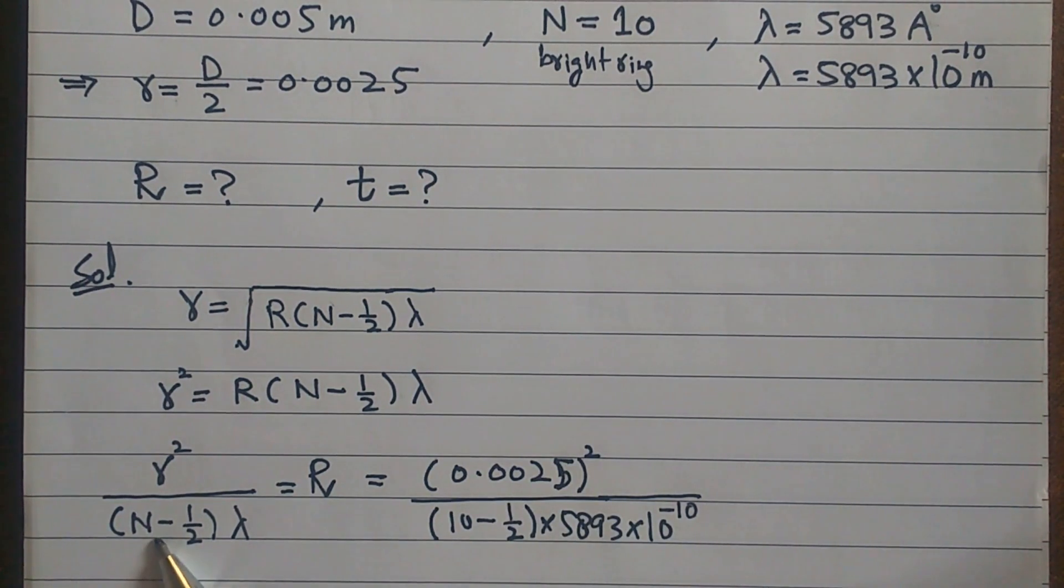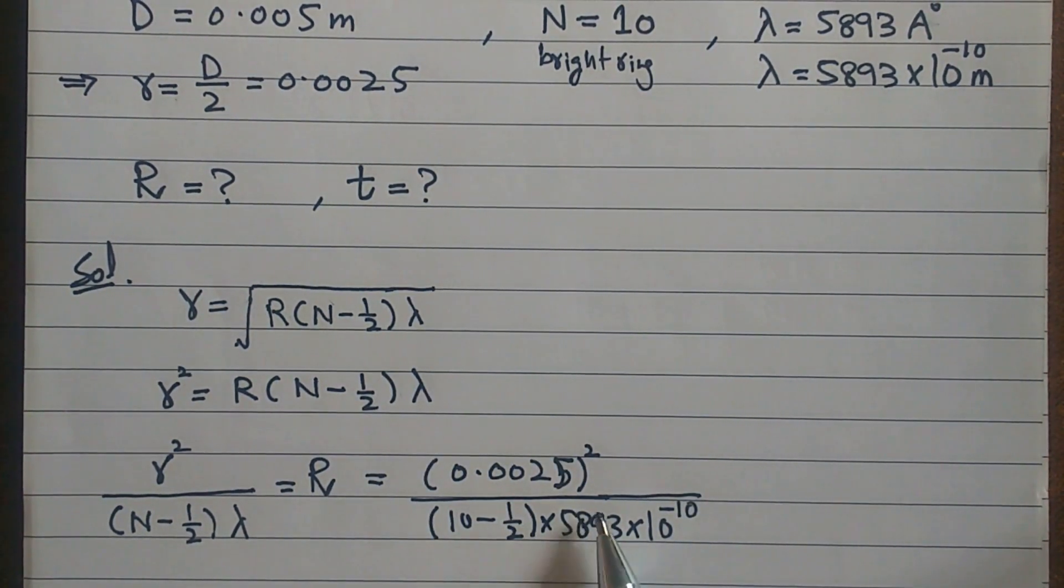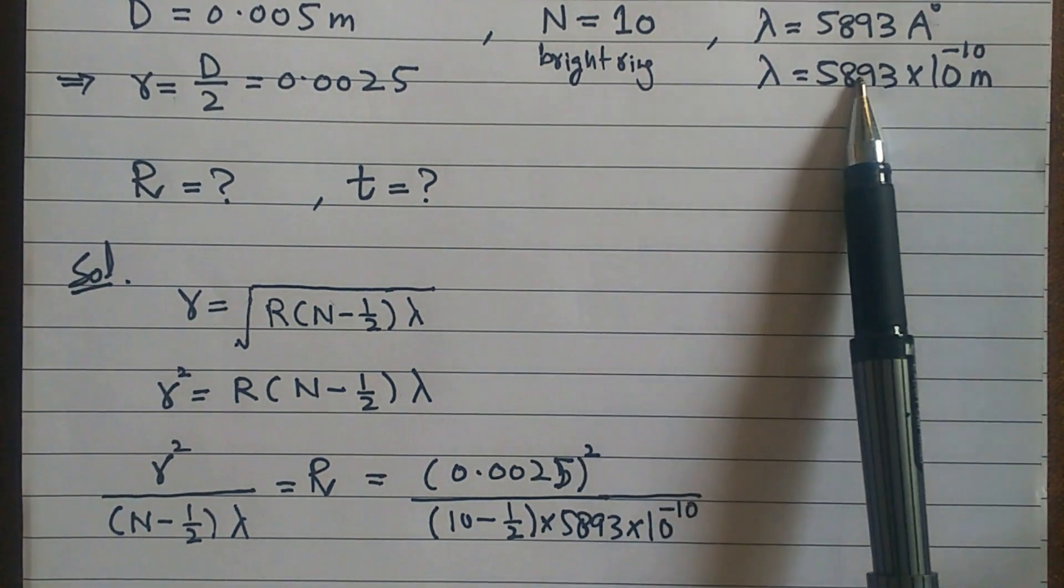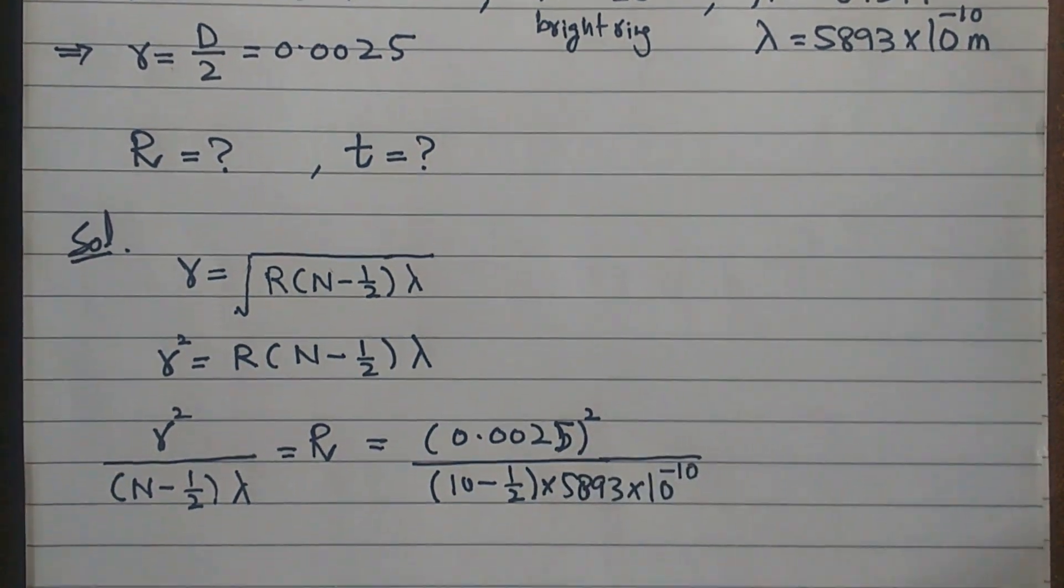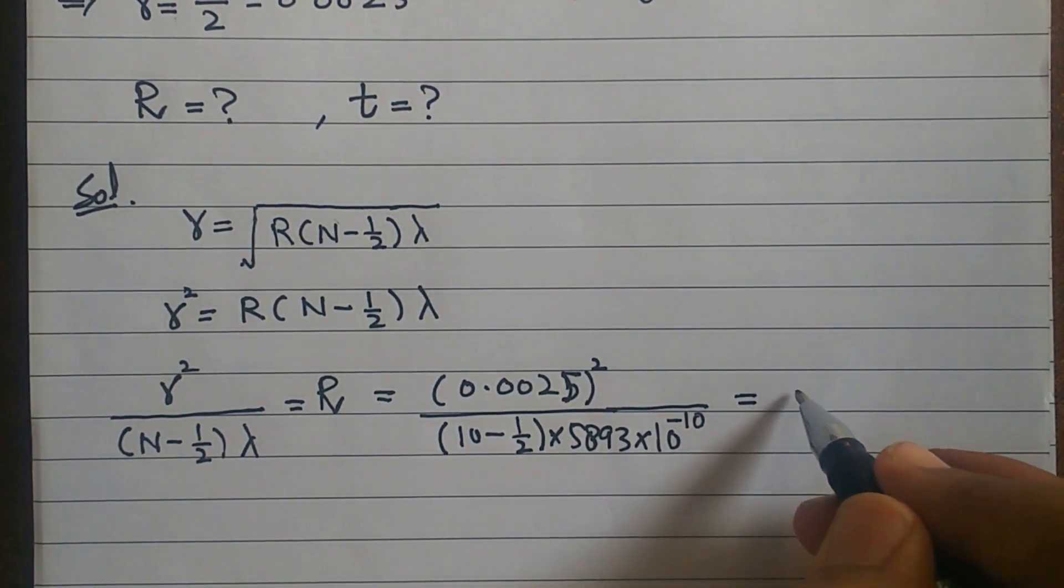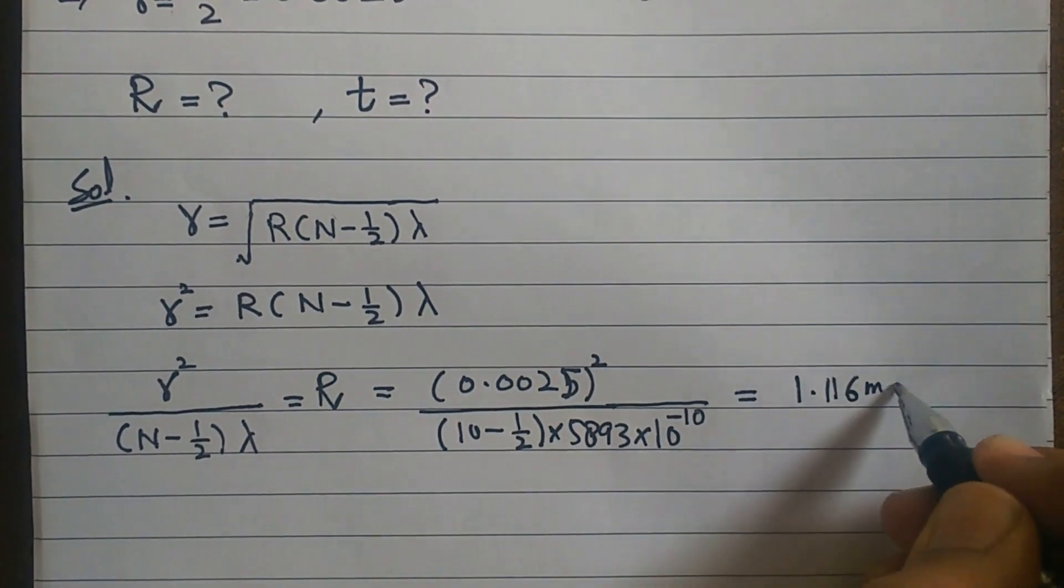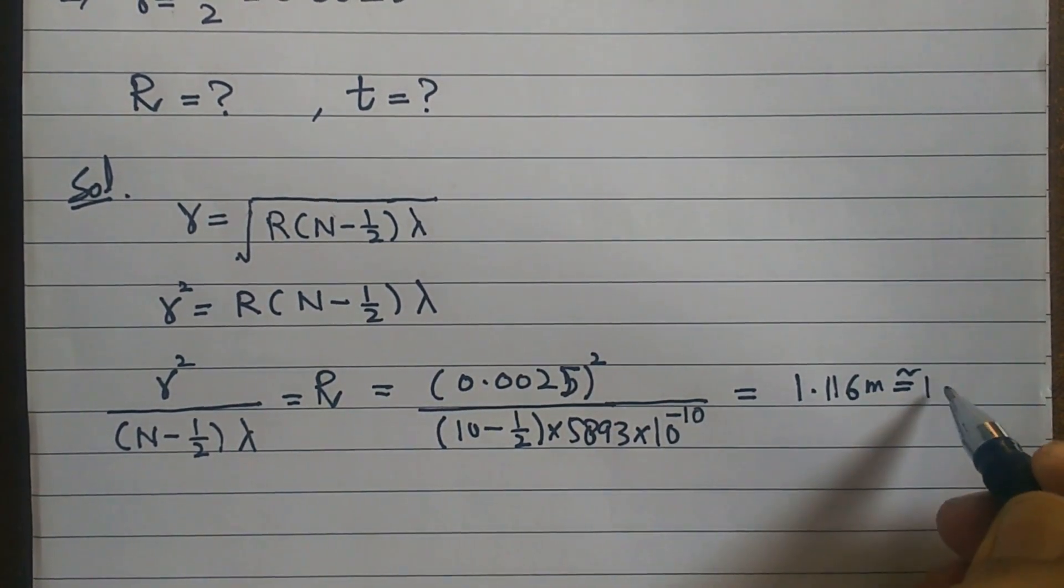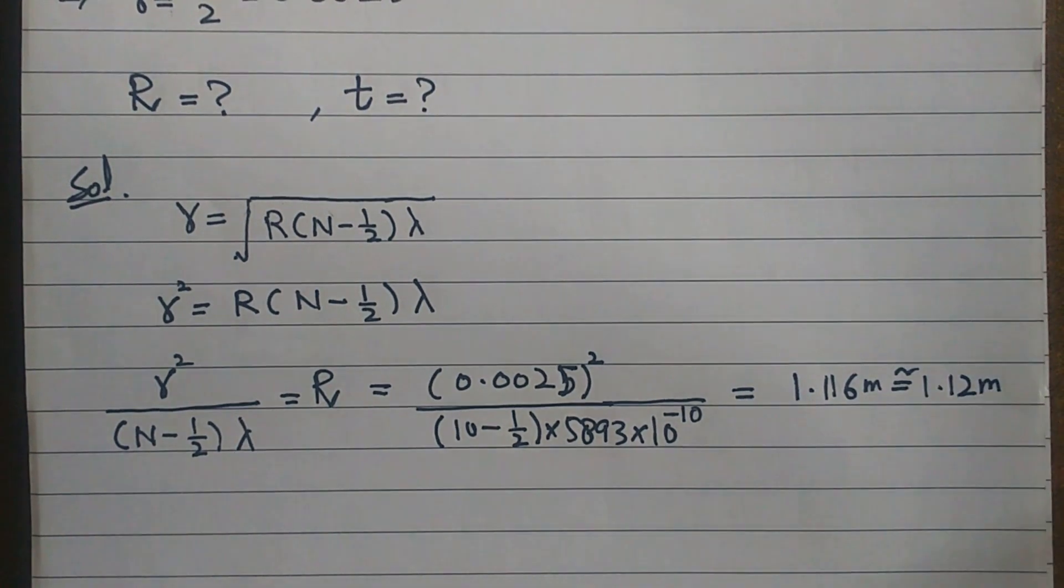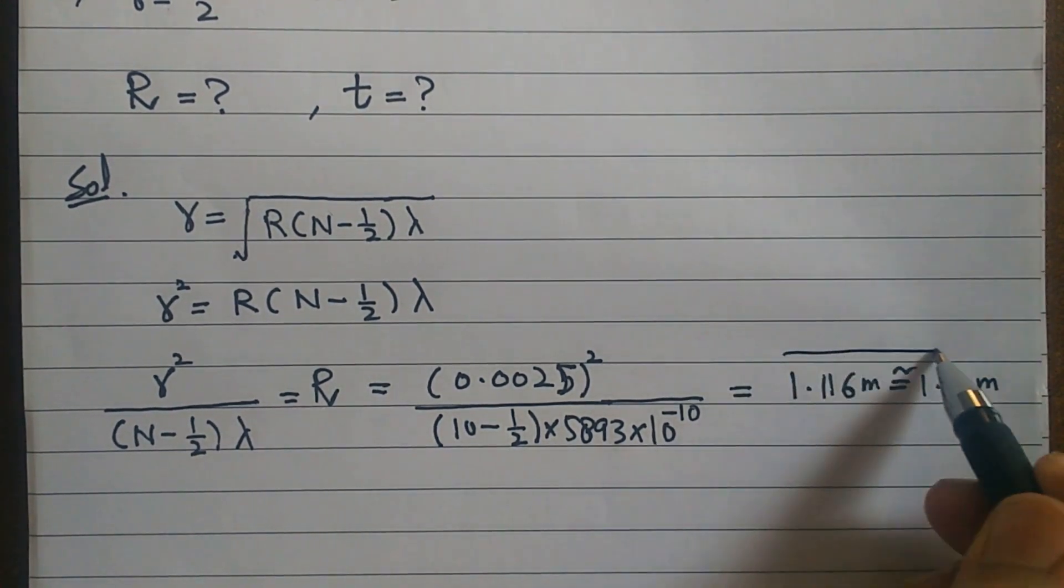Now I have to add N which is 10, N minus half, and lambda. Let's write it and solve it. The radius of curvature, so the value is 1.16 meters, which is approximately 1.12 meters. This is our value.